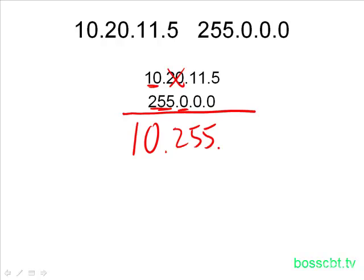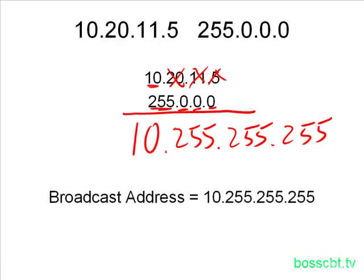Moving to the next octet, we have a zero again, so we immediately ignore that value and write down 255. Same thing for the last octet — zero again, so 255. We've determined our broadcast address. For this Class A network, we have 10.255.255.255.